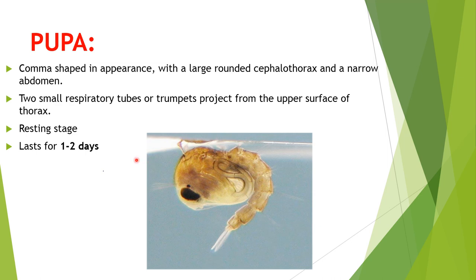Next is the pupa, which is comma-shaped in appearance, with a large rounded cephalothorax and narrow abdomen. There are two small respiratory tubes, also called trumpets, which project from the upper surface of the thorax. The pupa is in the resting stage of the mosquito and lasts for one to two days.